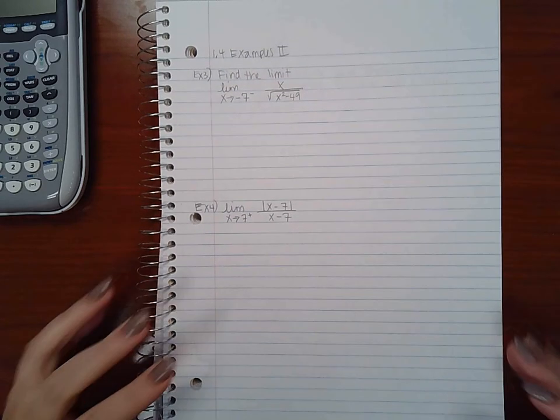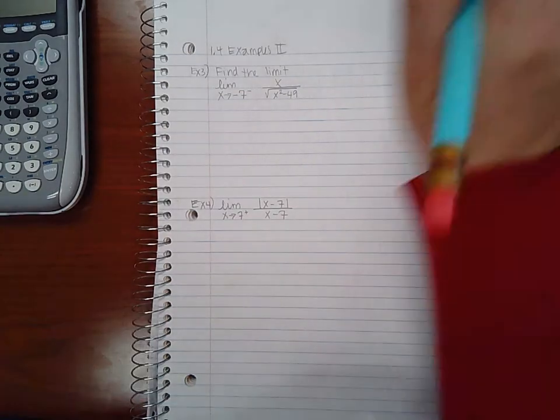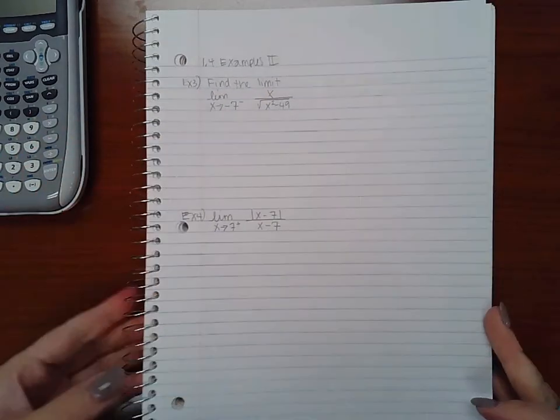This is going to be section 1.4 examples part 2. They want me to find the limit as x approaches negative 7 from the left and they give me my function here. Now I don't have a graph so I can't just visually look at it. I could use my graphing calculator, but remember what I mentioned about the test in section 1.3 is you need to be able to show me on paper what is going on.